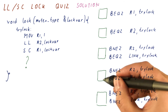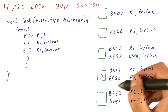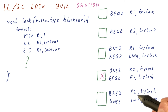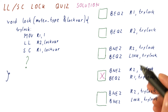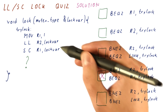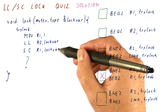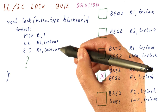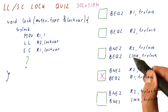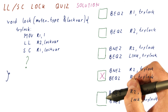Note that these two choices are checking the link register directly. We said that the link register is a hidden register — it can really only be accessed implicitly through load-link and store-conditional instructions. There is no instruction that can directly read the link register, so that's why these two are not correct choices.